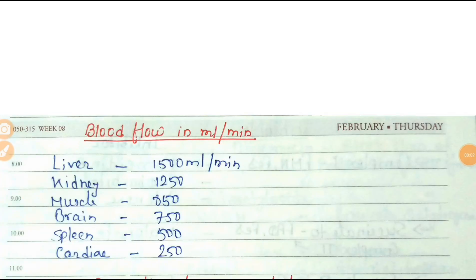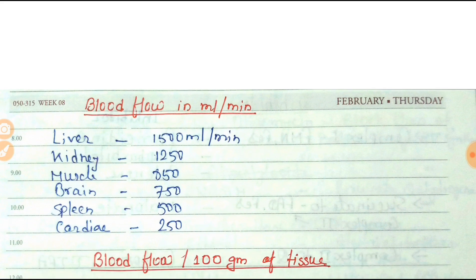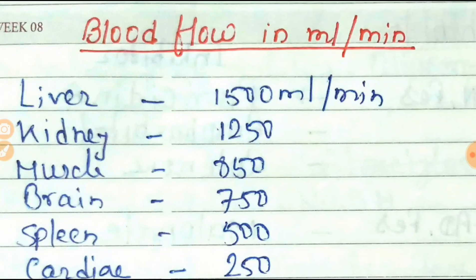Hi friends, today's topic is blood flow in ml per minute in different organs, which are most commonly asked in the PGA exam. The liver has 1500 ml per minute and kidney 1250 ml per minute.